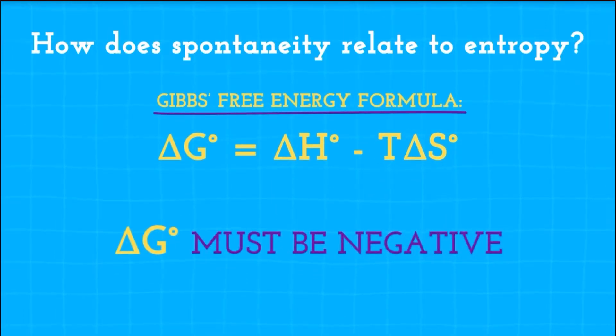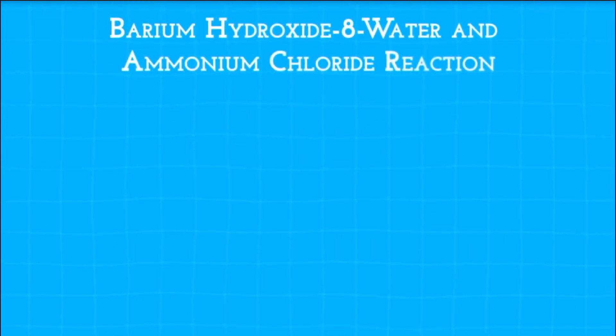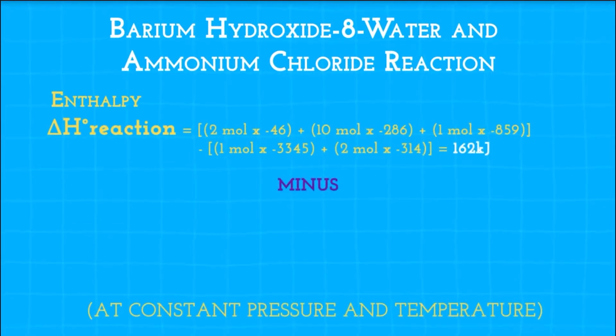For spontaneous reactions, delta G must be negative. The change in standard Gibbs free energy for a reaction is equal to the change in standard enthalpy minus the product of the temperature and change in standard entropy.